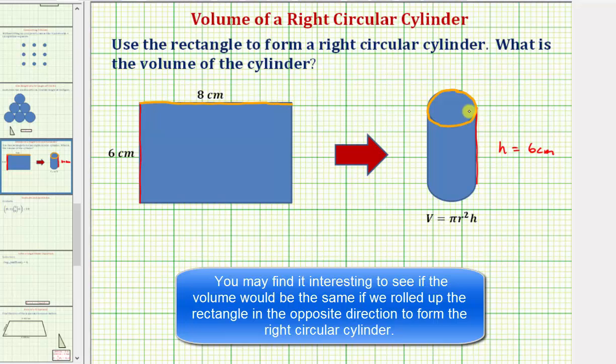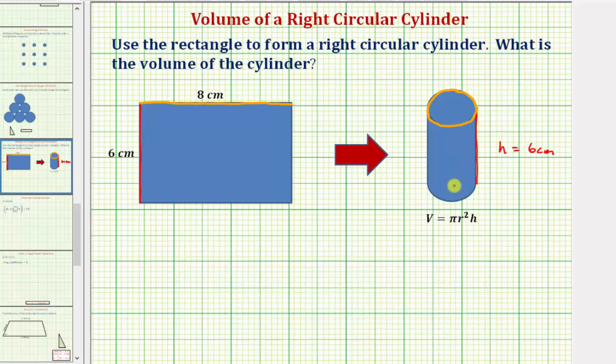The volume of a right circular cylinder is equal to pi r squared h, where r is the radius and h is the height. So in order to find the volume of this right circular cylinder, we need to find the radius r.